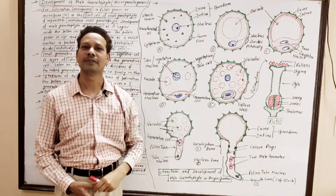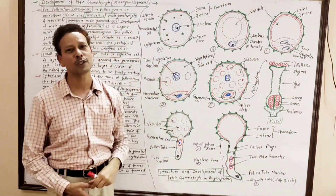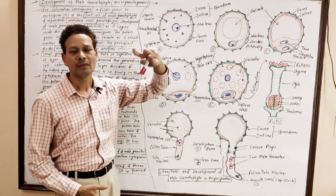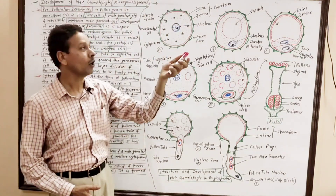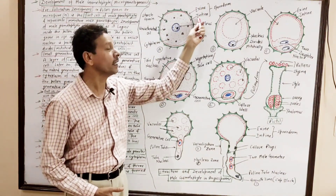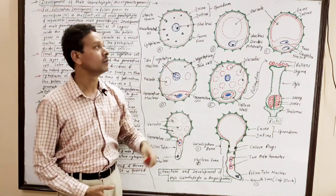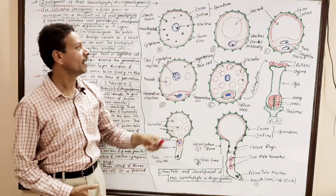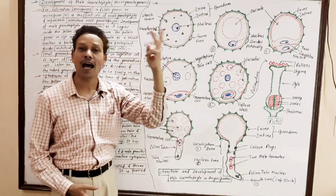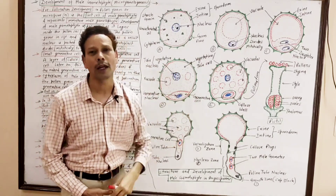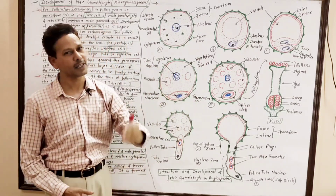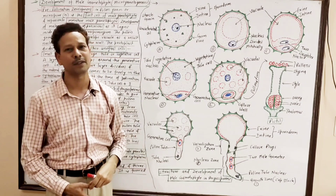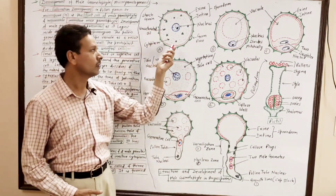This is the structure of a pollen grain or microspore. It has an outer wall made up of sporopollenin, and this wall is called the spore coat. This entire microspore — the pollen grain — is a haploid, unicellular, uninucleated structure.